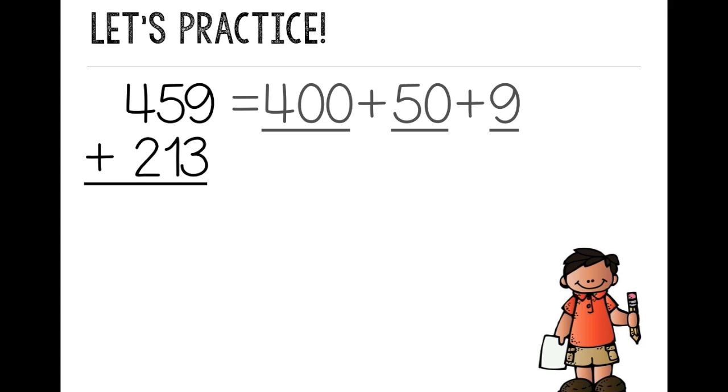My next number is 213. First, I look at the hundreds place. There's a 2. So that means 200. Then I look at my tens place. There's a 1, so that means 10. Then I look at my ones place. I see a 3, so I have 3 ones. So 213 is equal to 200 plus 10 plus 3.